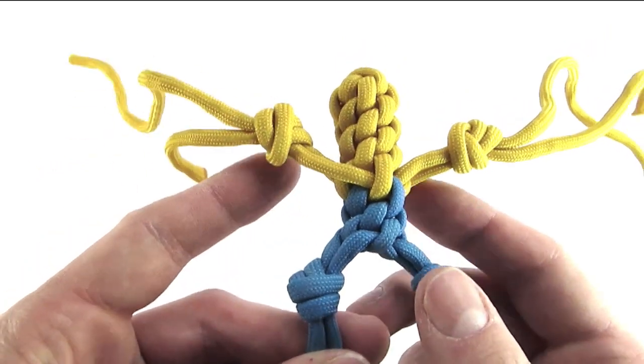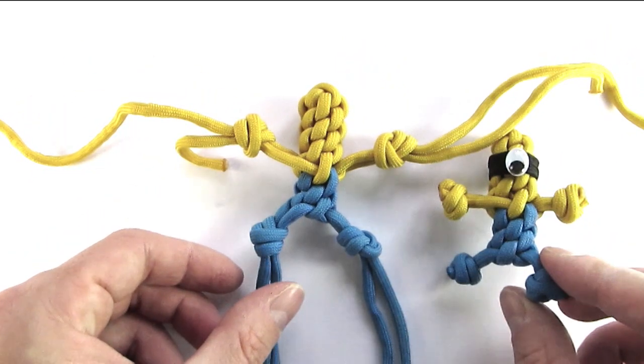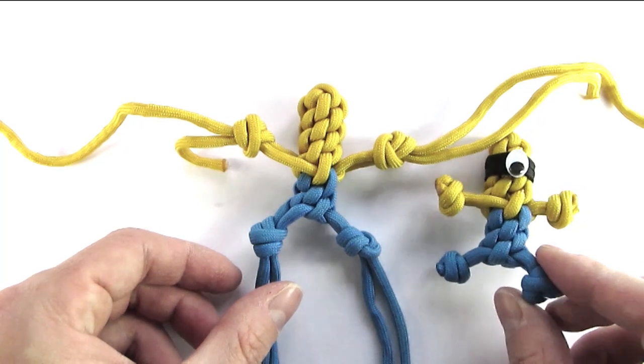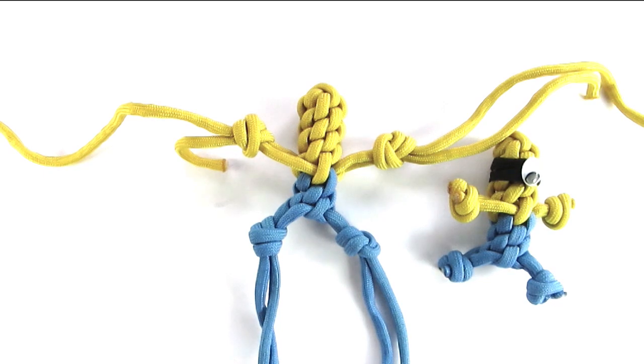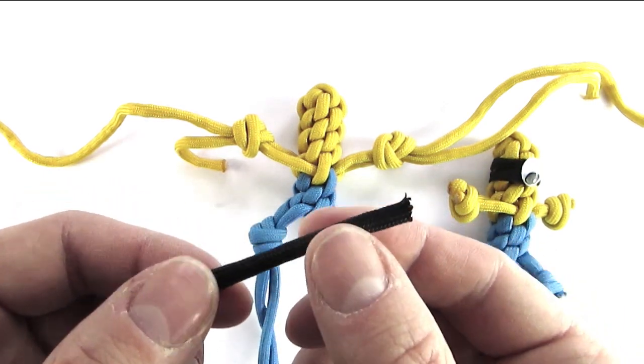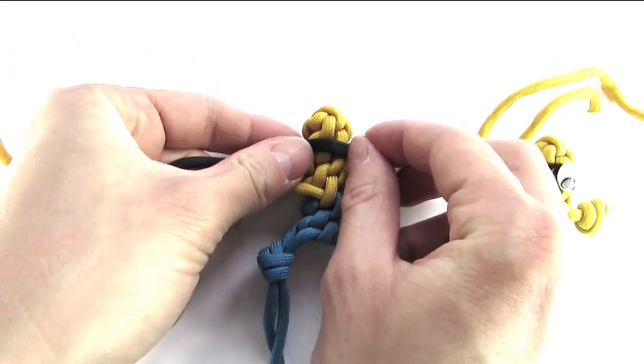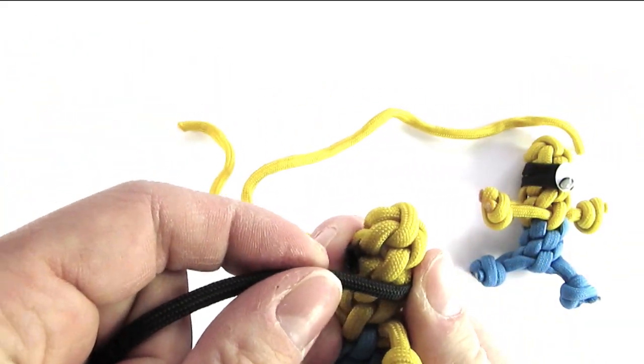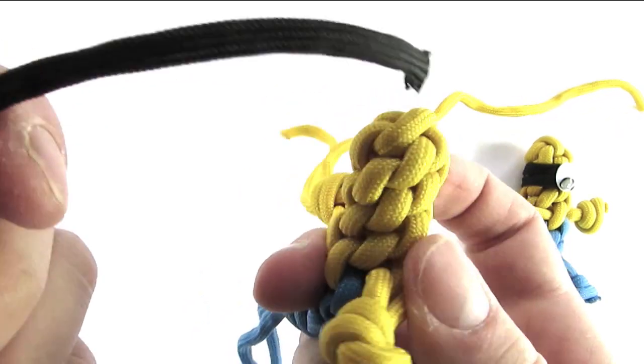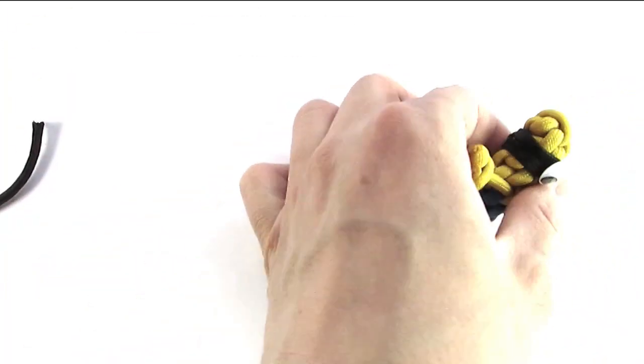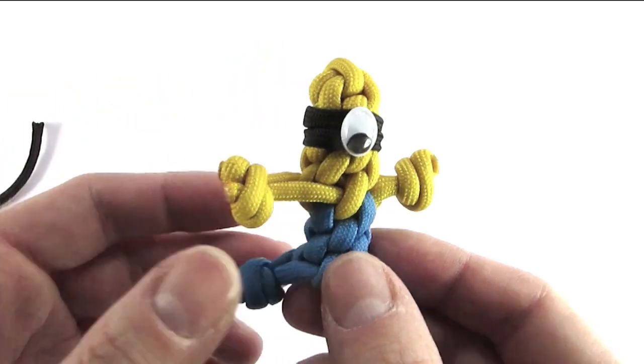Once you have that done, we will need to attach a headband, the black one that is. And I'm just going to take some gutted black paracord, wrap it around. And I've seen people just melt it at the back and that works perfectly fine. I prefer to tie on a constrictor knot and then melt the back.